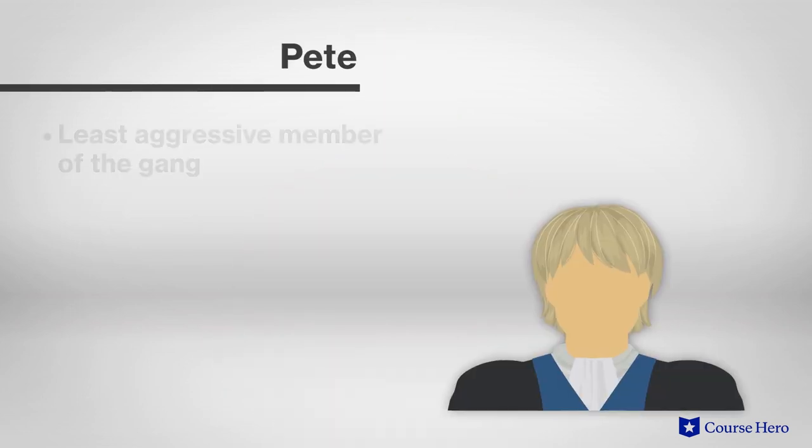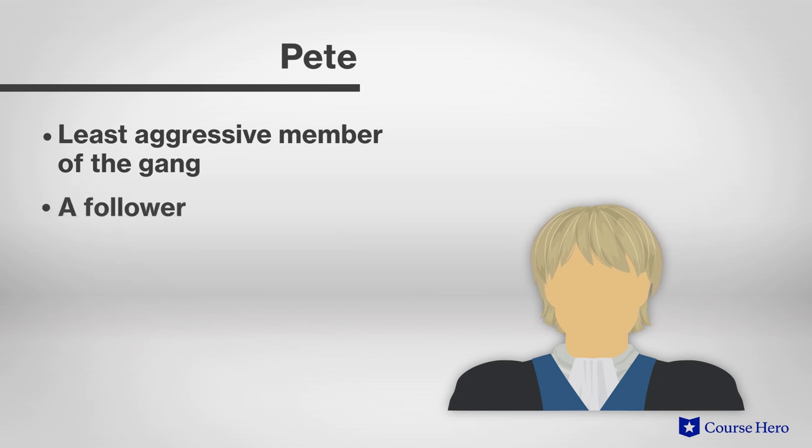Pete is the least aggressive member of Alex's gang. A follower, he tries to diffuse the tension between Alex and Georgie, and unlike the others, by the time he's 19, he's left the violent teen culture behind, married, and entered the adult world of work and family.